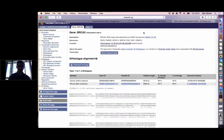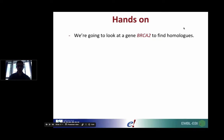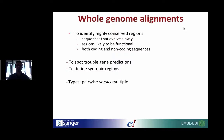That brings me to the end of the first demo. Now in the second half, I want to talk about the whole genome alignments we have in Ensembl. The whole genome alignments are really useful for identifying highly conserved regions — sequences that have evolved slowly over time and are likely to be functional, including both coding and non-coding sequences. They're also useful for troubleshooting gene predictions and defining syntenic regions.